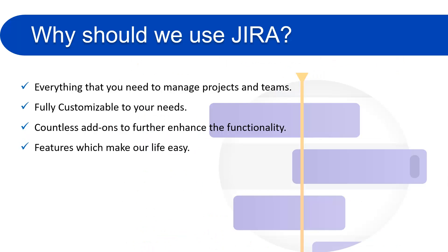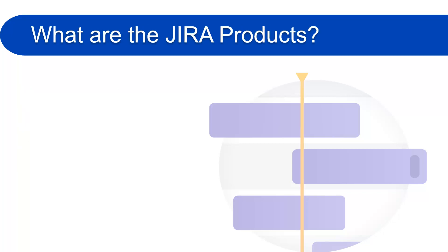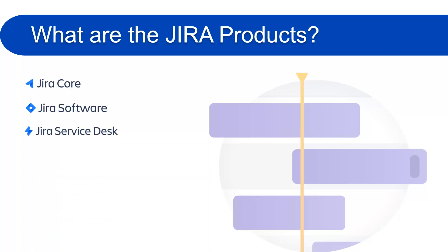Jira has lots of features which make our life easier. Many people are not aware that Jira is actually a family of products built to help all types of teams track their work. There are four products built on the Jira platform: Jira Core, Jira Software, Jira Service Desk, and Jira Ops.